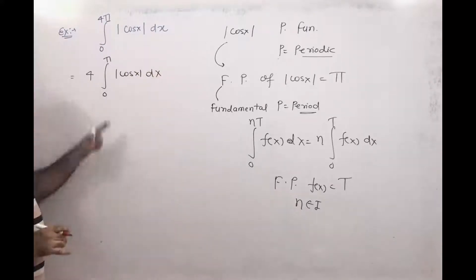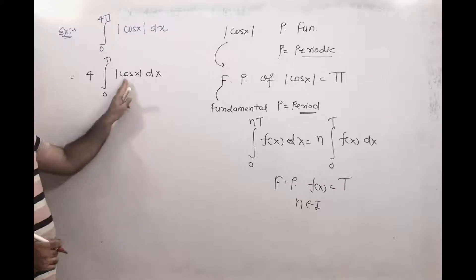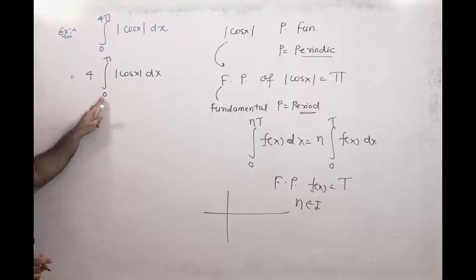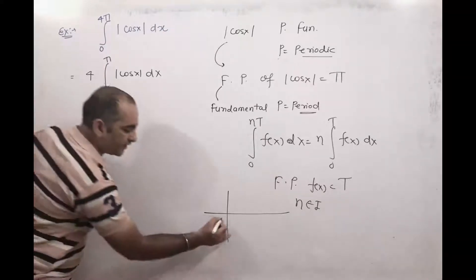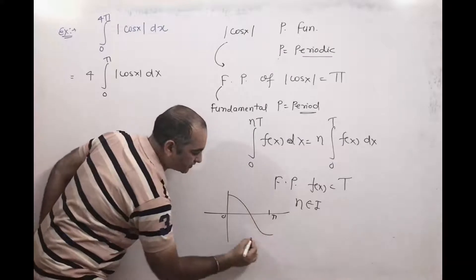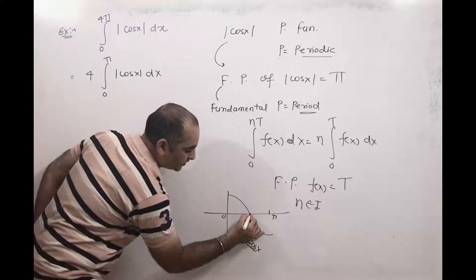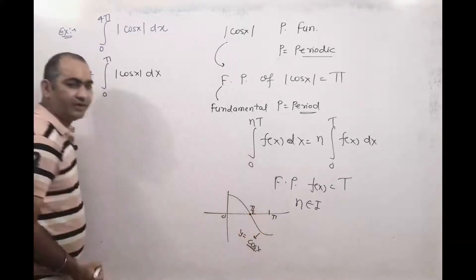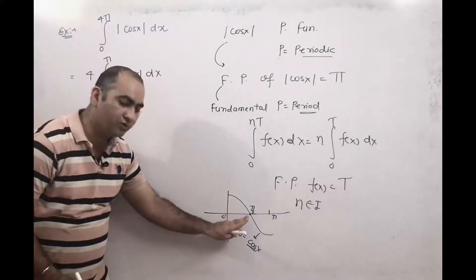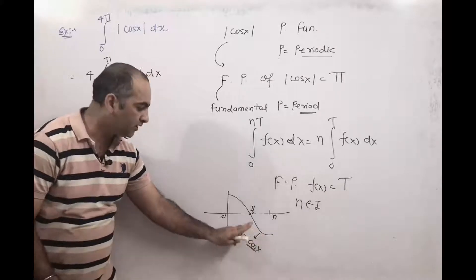Now modulus of cos x is there, so we have to remove the modulus. We know the cos x graph, and we want it in the interval 0 to π. So 0 is here and π is here. The graph of modulus of cos x — this is the y = cos x graph — has a key point at π/2. From 0 to π/2, cos x is positive, and from π/2 to π, cos x is negative.